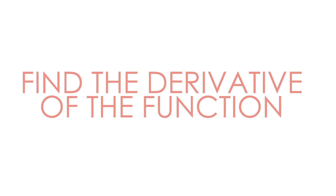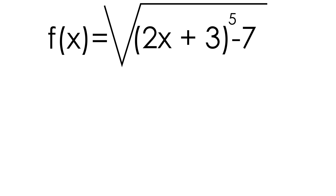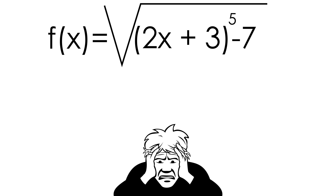In this example, we need to find the derivative of the function f of x equals the square root of 2x plus 3 to the fifth, minus 7. This example is a little bit harder because we have a square root and there's going to be lots of algebra involved.